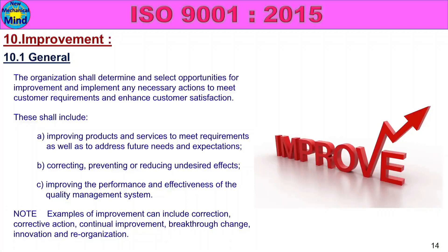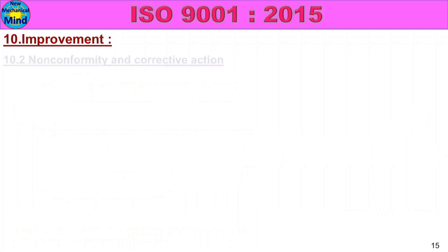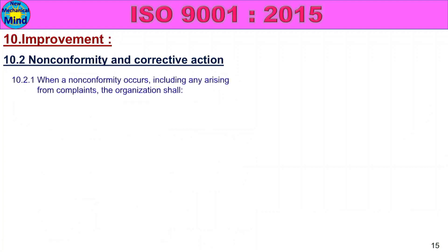Class 10.1 General details. Class 10.2 Non-conformity and Corrective Action. Class 10.2.1: When non-conformity occurs, including any arising from complaints, the organization shall act.